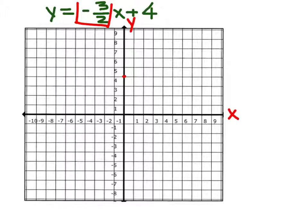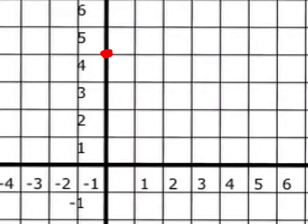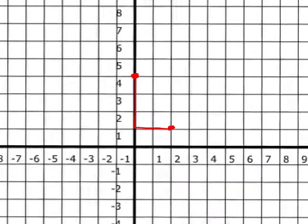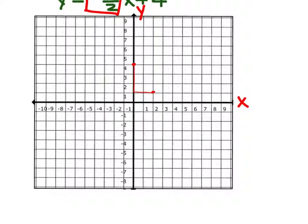Go down 3 and then over 2. Go down 3 and then to the right 2. So we go down 3 to the right 2 and once you have that, you go back through and draw your line.